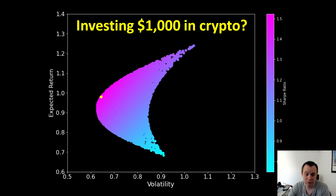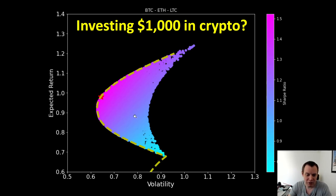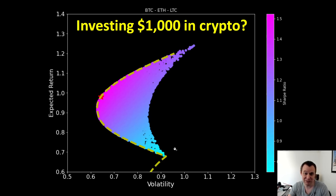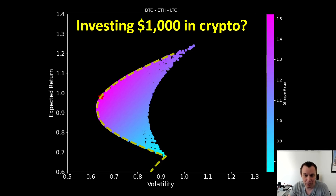We know there are years in crypto where returns are not good, but on average you're doing fairly well — roughly 100% annual expected return based on historical data for a Bitcoin, Ethereum, and Litecoin composition. This is the efficient frontier. The part below might be called the inefficient frontier. For a given volatility or risk level you're comfortable with, there exists a single portfolio that maximizes your risk-adjusted returns or Sharpe ratio.